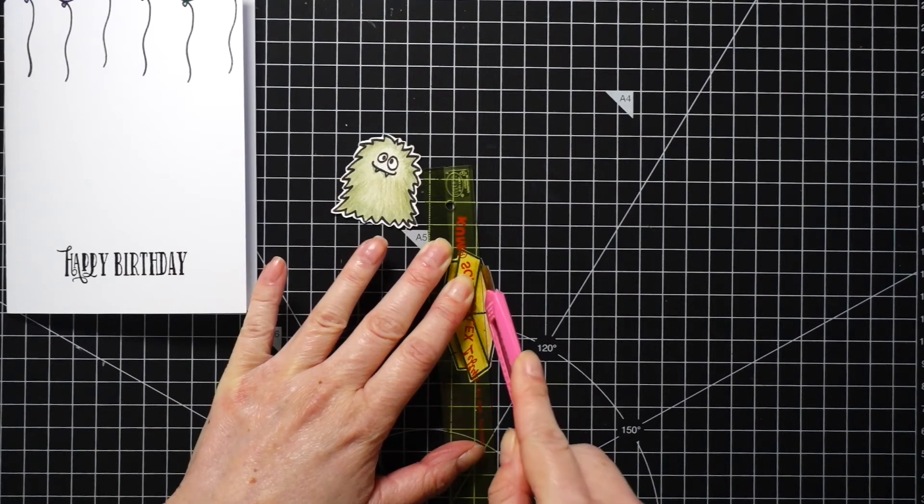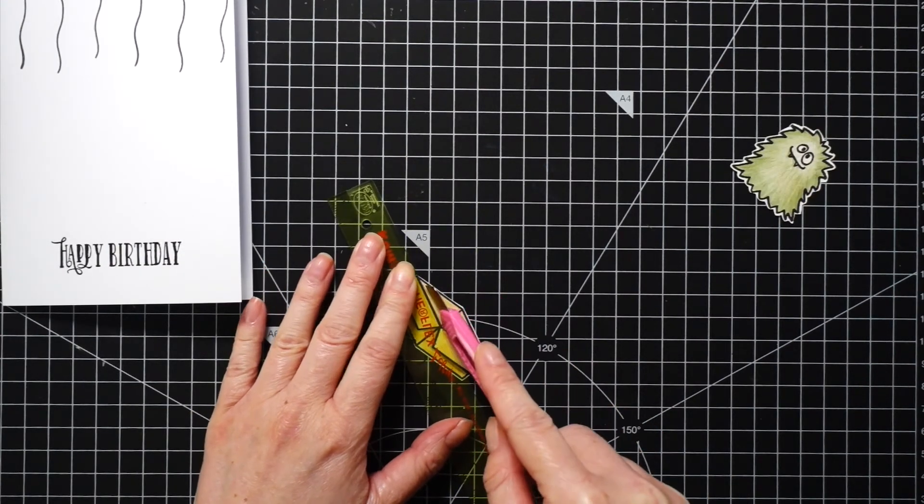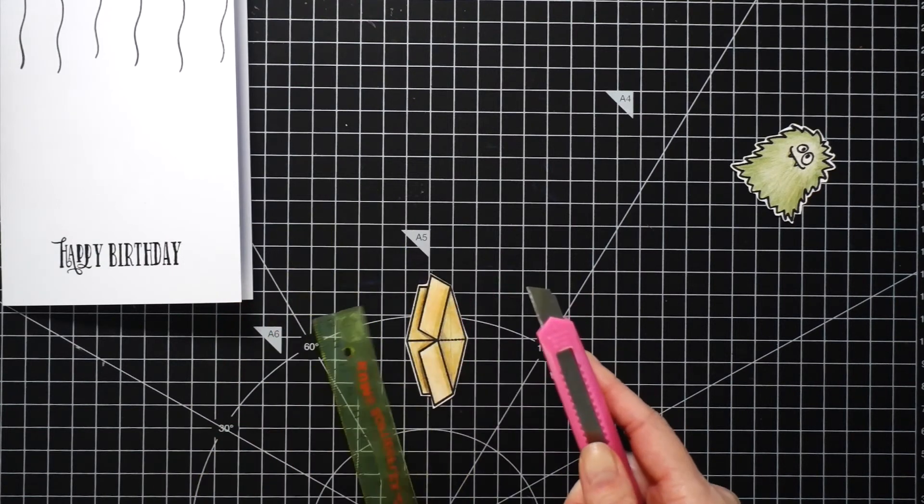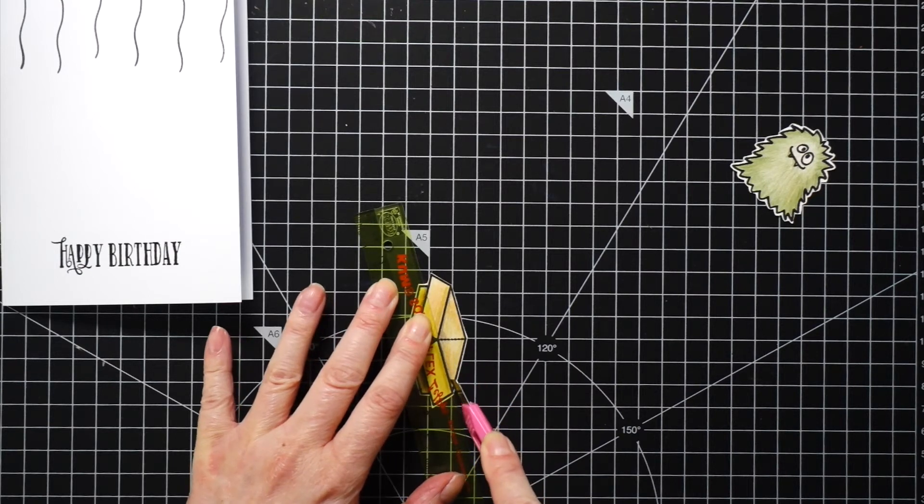I also wanted the monster a little bit tucked in the box, like he is coming out of the box. So before adhering the monster on top of the card I took a crafting knife and cut a slit in the middle as well as along the front edges inside of the box.